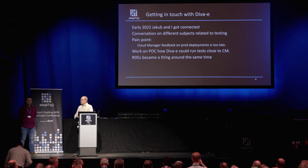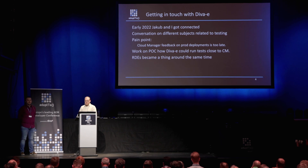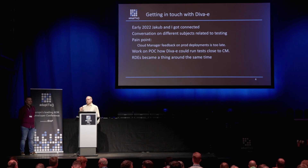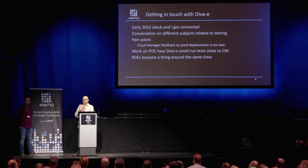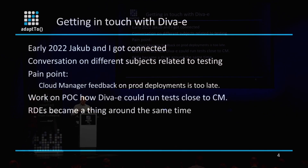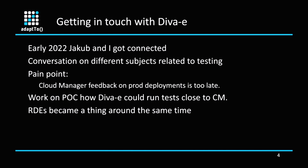In early 2022 I got in touch with Jakub, looking into some problems they were facing. One of the points we touched on back then was that they really had problems with their testing strategy. Stefan also mentioned that earlier — about the custom functional tests, how they use it to validate the JSONs — but in the current way it was failing way too late in the pipeline. They would do their local development but failures were found way too late in Cloud Manager. So I started working on a POC on how this could be tested closer, at an earlier stage. Also back then, RDEs started to become a thing, so I started looking into those aspects.